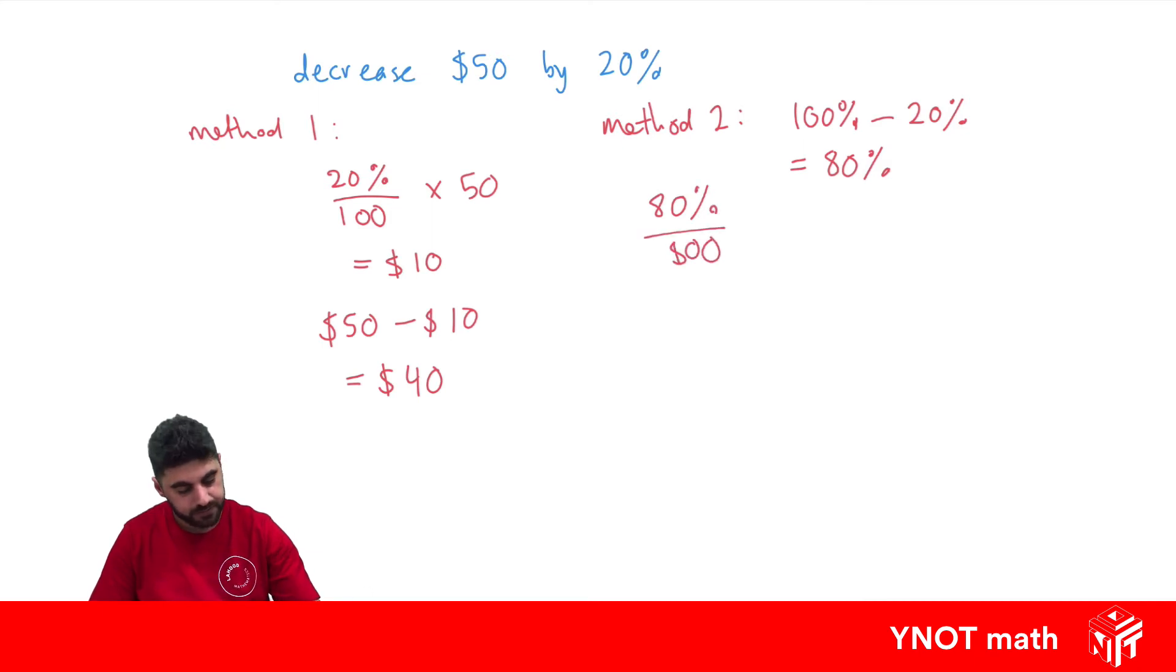Oops, 80 over 100 and times that by the thing we want to decrease. And doing this straight away gives us $40.